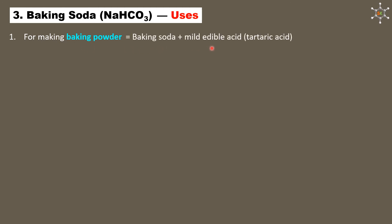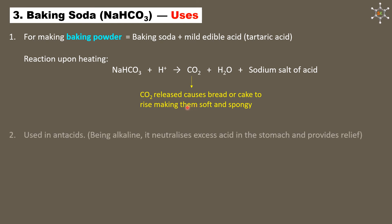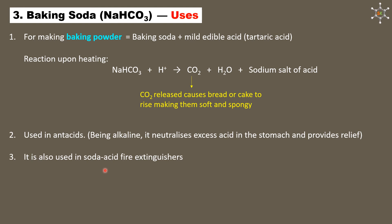Baking powder is specifically used for making bread and cake. During heating, baking soda reacts with the acid in the mixture and releases carbon dioxide, which causes bread and cake to rise and become soft and spongy. Since baking soda is basic, it can also be used as an antacid to neutralize excess acid in the stomach.